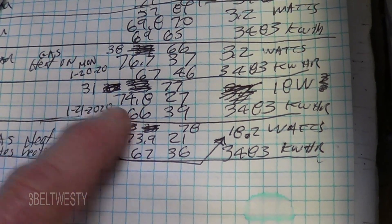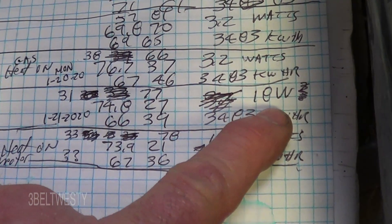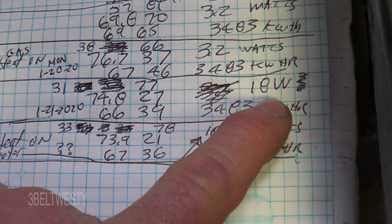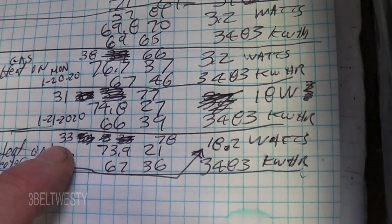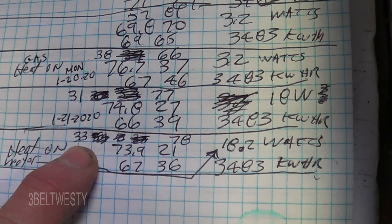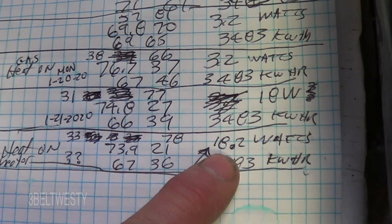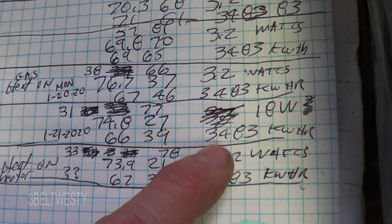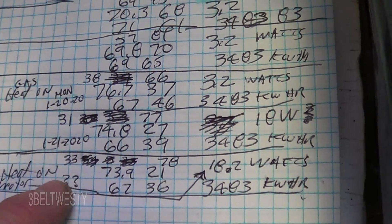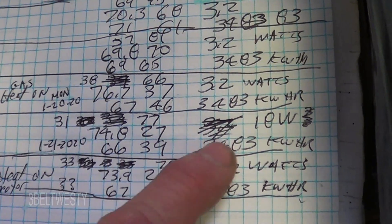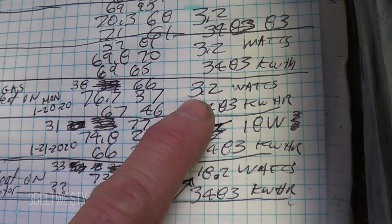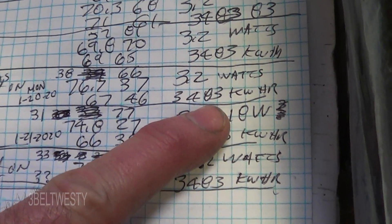Tuesday it was 31 degrees early in the morning, and it was 18 watts total, kind of dancing around. Here it is, 33 was early this morning, and it was 18.1. So somewhere between, say, 33 degrees and 38, the crankcase heater is turning on right here. That's what's going on.